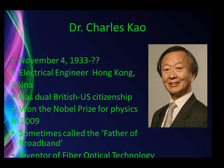Charles Kao was born November 4th, 1933, and is still alive. He is an electrical engineer from Hong Kong, China, with dual British and US citizenship. Quick history trivia: why does he have British citizenship if he was born in Hong Kong? Think about that. He won the Nobel Prize for Physics in 2009 for his work in optical technology, and he is sometimes called the father of broadband — which means internet.